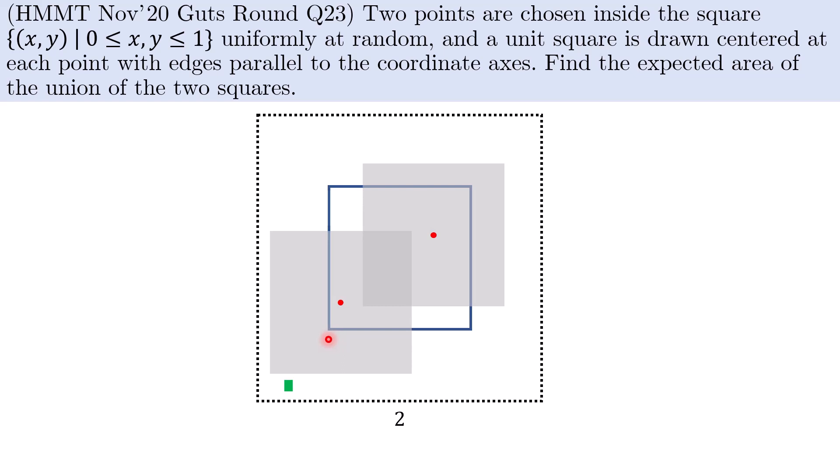Now for a tiny area element dx by dy, we calculate the probability of it being covered by at least one of the two grey squares, and integrate this probability over the entire big square to get our final answer. Now even with this line of attack, this problem is still far from over. We now focus on an area element in the lower left quadrant here, and first calculate what is the probability that the area element will be covered by at least one grey square.